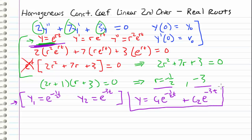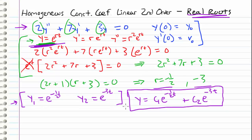Since we have two possible solutions and a linear differential equation, our final general solution y is a linear combination: y equals c1·e^(−t/2) plus c2·e^(−3t). Since r₁ and r₂ are real numbers, we don't need to do anything special. If they were complex, we'd apply Euler's formula; if they were repeated, we'd use reduction of order. But here we're done — we just need to find c1 and c2 from the initial conditions.